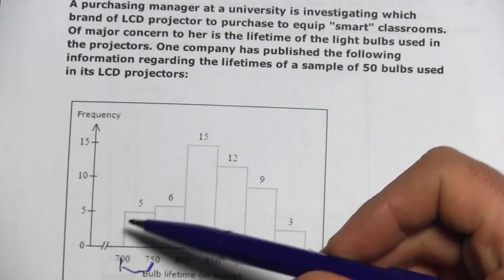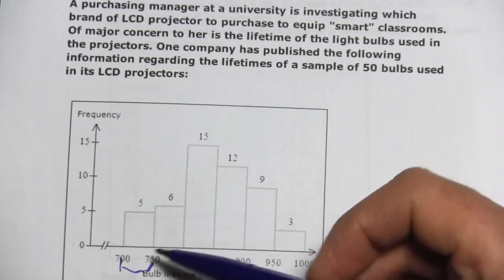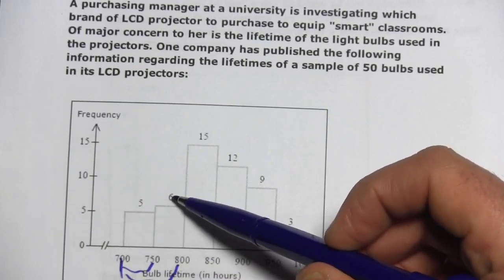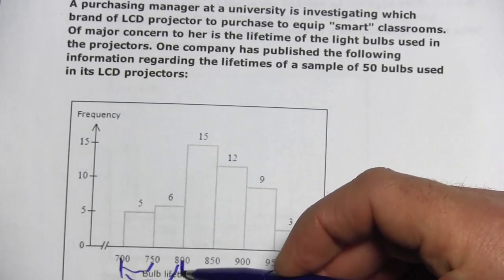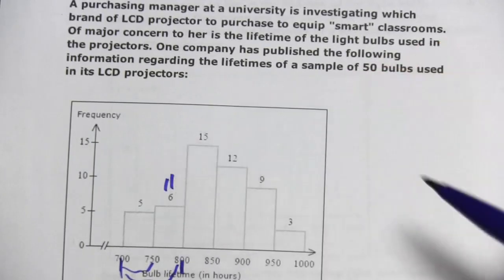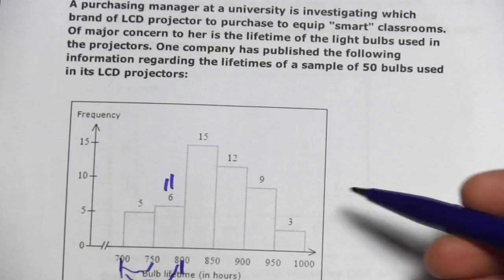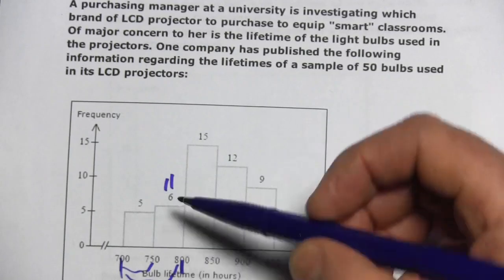You started at 0 at 700, you got up to 5 here. The frequency from 700 to 800, we'll just add 5 and 6. By the time you get up here, you're at 11 for a cumulative frequency. And we just keep going on up that way.